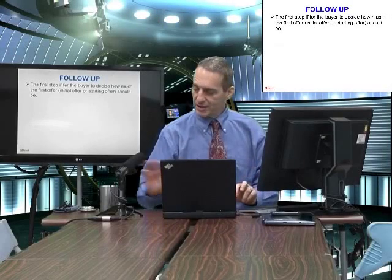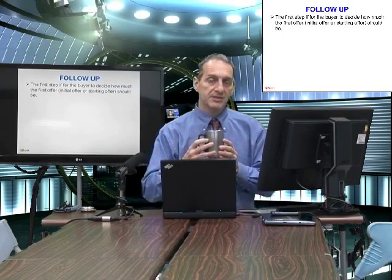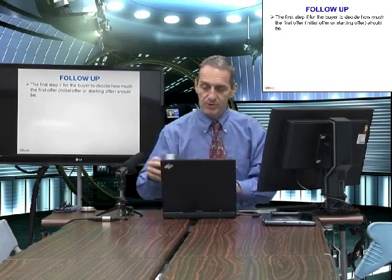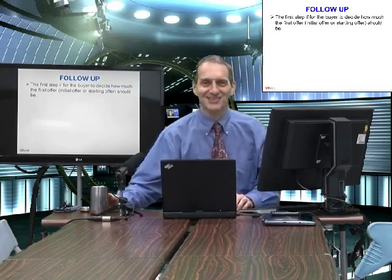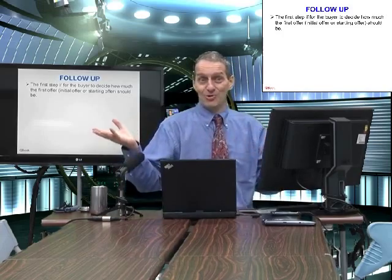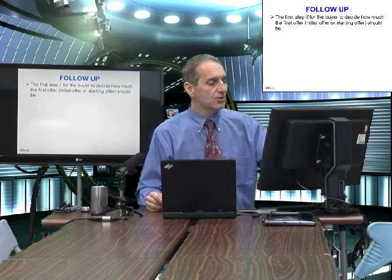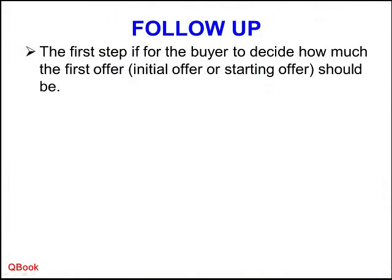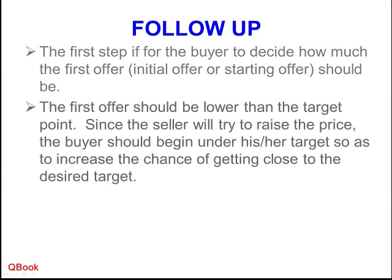So if I go to buy the cup and the list price is $100, I must decide: what do I say to begin with? The first offer needs to be lower than the target. Remember my target was $50. Since the seller will always try to raise the price, the buyer should begin under the target. If my target is $50, I must begin below $50 — I say I'll give you $40.